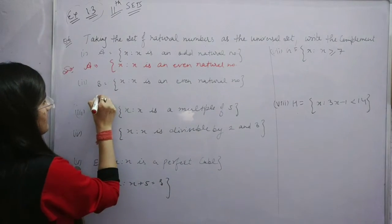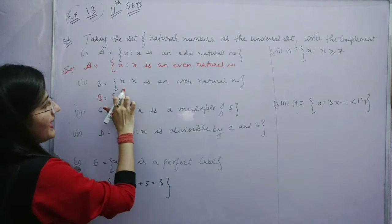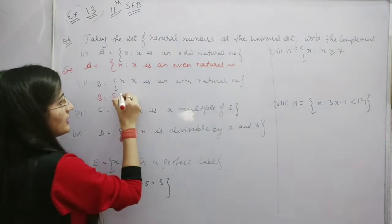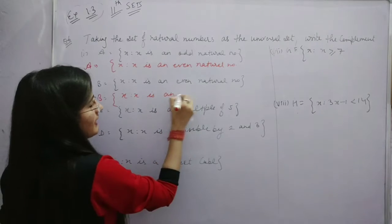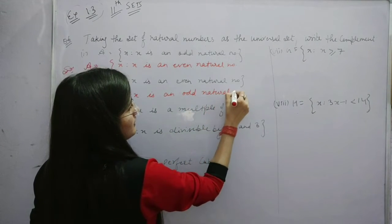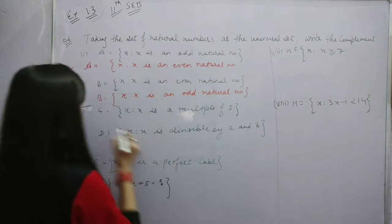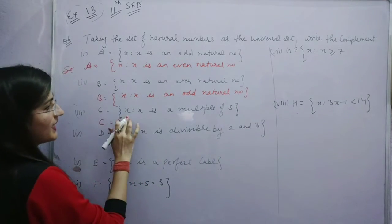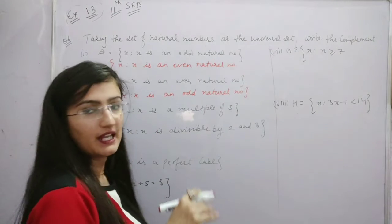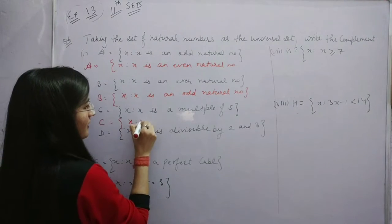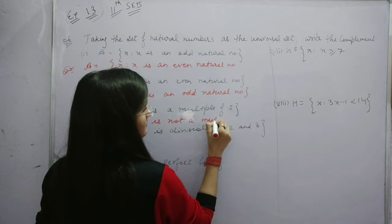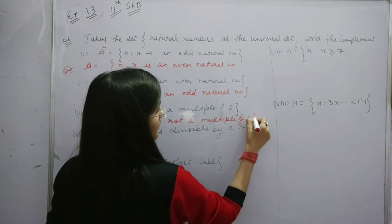As a second part, the set is such that x is an even natural number. So even's complement is odd: x such that x is an odd natural number. Then, for the part such that x is a multiple of 5, the complement is x such that x is not a multiple of 5.